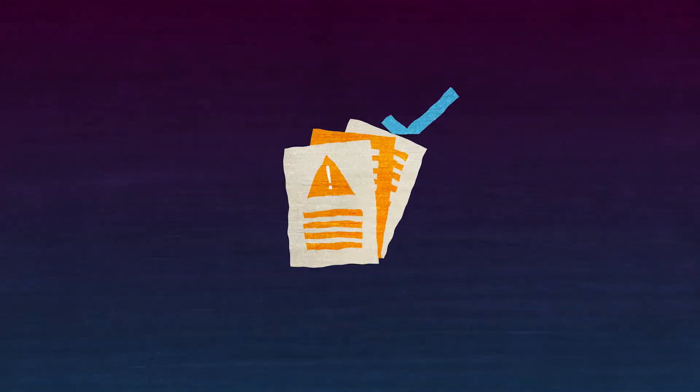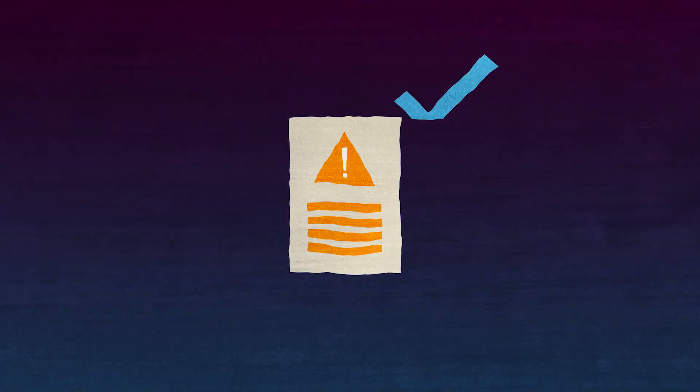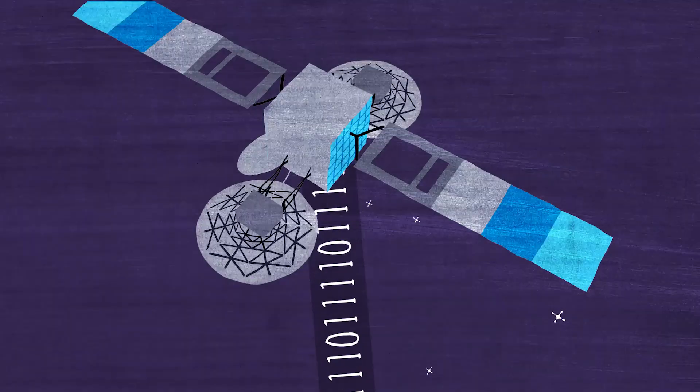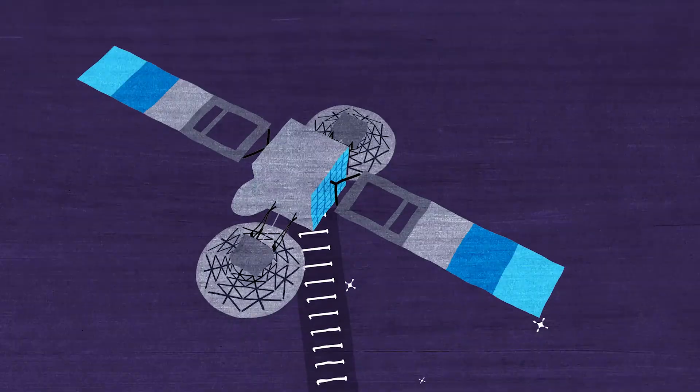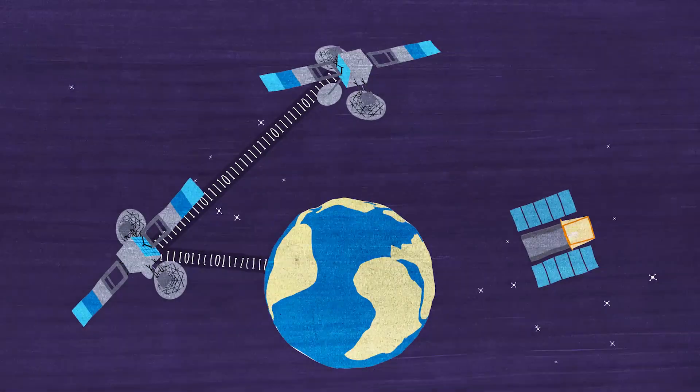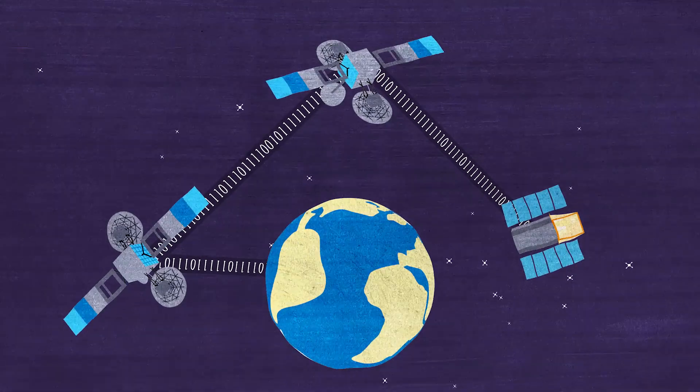If we decide to approve this request, we will send that information up to the satellite via the TDRS network. This is a network of satellites orbiting all around which allow us to talk to Swift at any time.